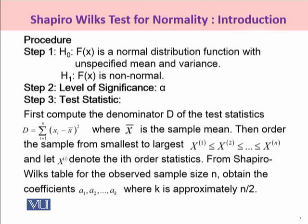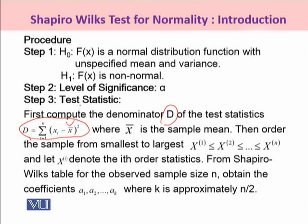Step 3 is the test statistic. First, compute the denominator part, denoted as D, which is calculated as the sum of squared deviations from the sample mean X-bar. Then arrange the data from the smallest to the largest observation — this is called the ordered array. From this ordered sample data, we calculate X(i), which is the i-th order statistic.